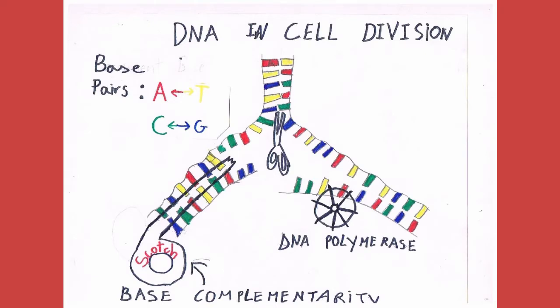DNA is composed of four bases: A, C, G, and T. A always binds with T, whereas C always binds with G.